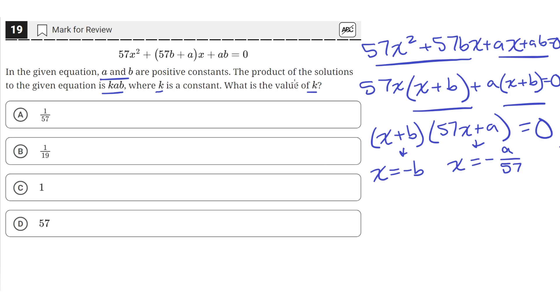So now the problem statement says the product of the solutions is kab. Let's multiply these two solutions together. We'll get a positive ab/57, since the negatives cancel out, and we just multiply the a and the b together in the numerator.